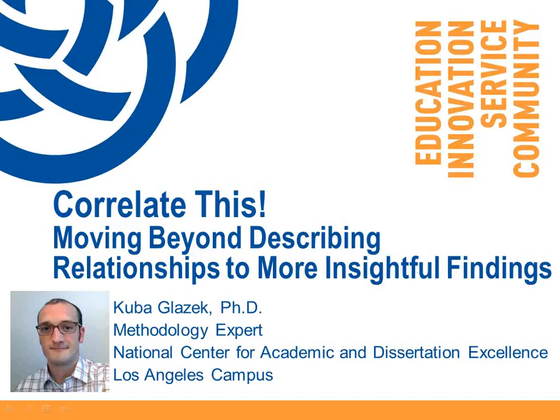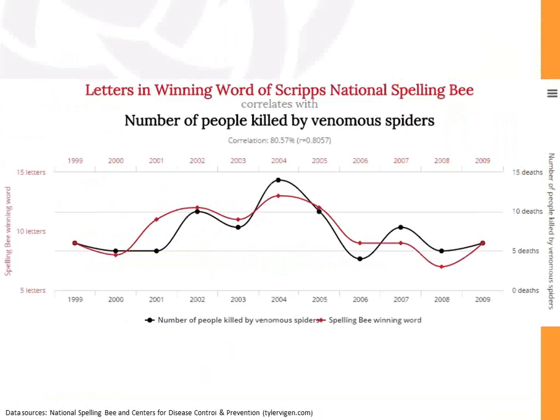To begin with, let's look at a very generic example of a potential problem with analyzing a correlation. Here we have the correlation between the number of letters in a winning word in a spelling bee, represented by the red line, and the black line represents the number of people killed by venomous spiders. There's a pretty close relationship between these two variables — the correlation is 0.8, which is a very large correlation.